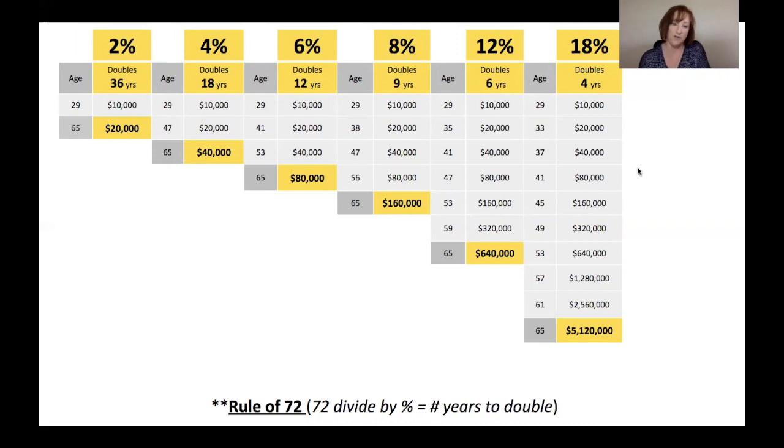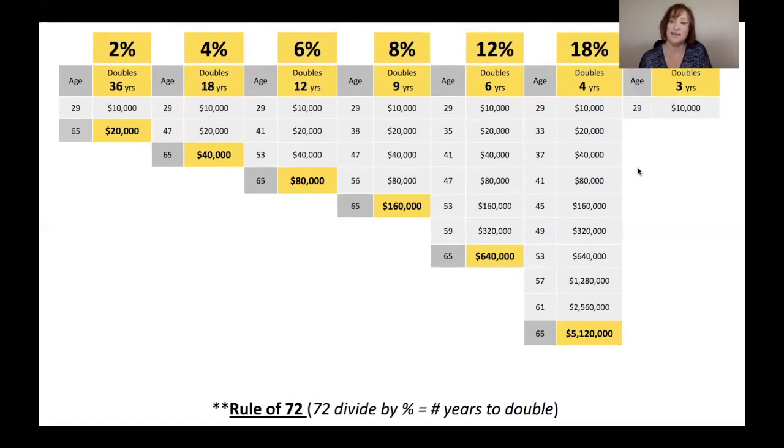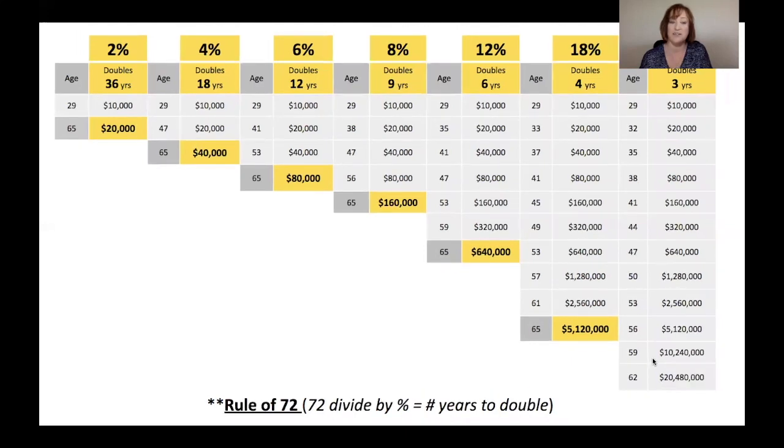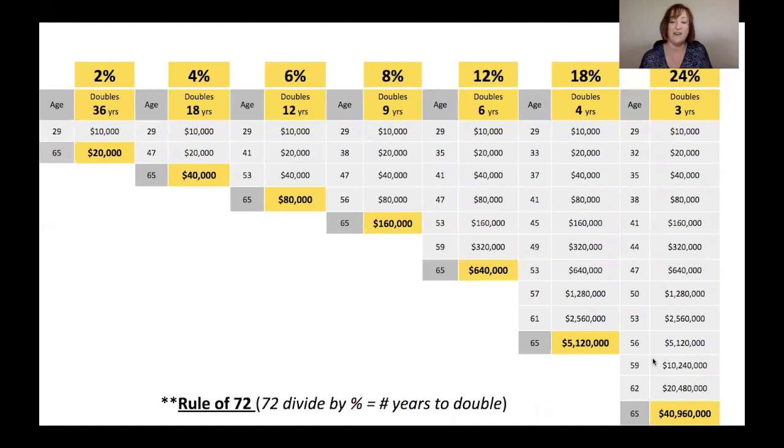I'm just going to show you at 24% for fun. And, again, it's just mainly because that's where your credit card debt normally is. So the money doubles every 3 years. So this is the money that the bank is making off of you right now. So the same 29-year-old, money is doubling every 3 years. By age 59, $10 million. By age 62, $20 million. By age 65, $40 million. Unbelievable.